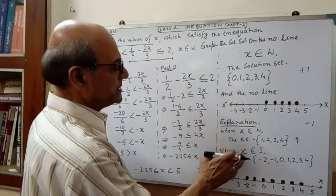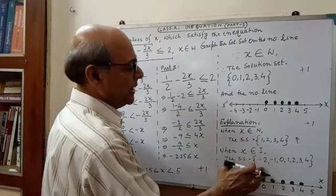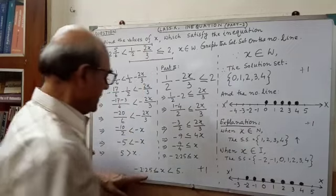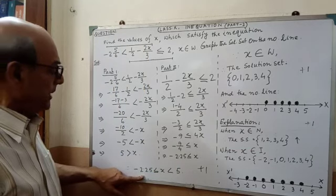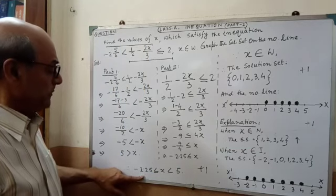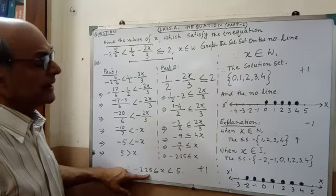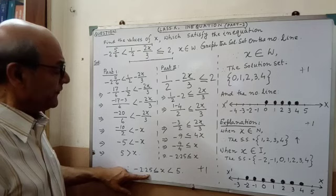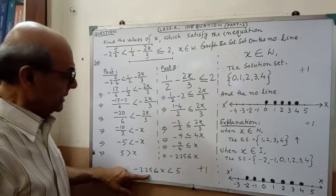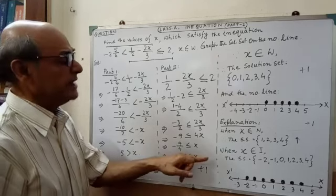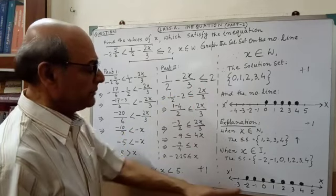Another point: when x belongs to integer, the solution set starts from minus 2. Here, less than equal to minus 2.25 — since it is an integer, the fractional part will not be considered. In case of real number, fractional and decimal values are accepted. But in case of integer, natural number, and whole number, fractional parts will not be considered — so it becomes minus 2.